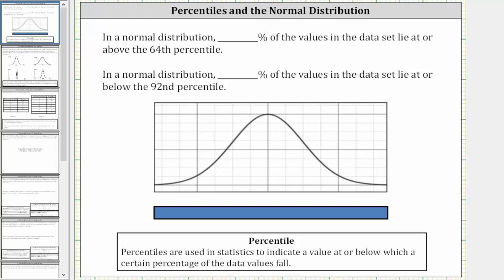In a normal distribution, what percent of the values in the data set lie at or above the 64th percentile? Percentiles are used in statistics to indicate a value at or below which a certain percentage of the data values fall.